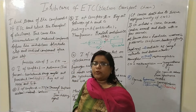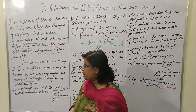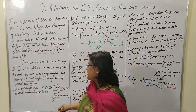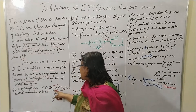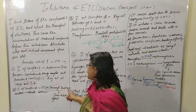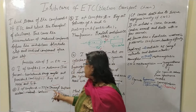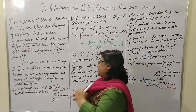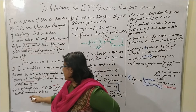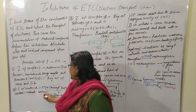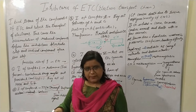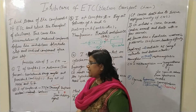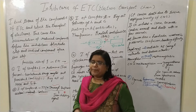The inhibitors of complex 2 include TTFA — which stands for thenoyltrifluoroacetone — malonate, and carboxin. TTFA is an iron chelating agent.